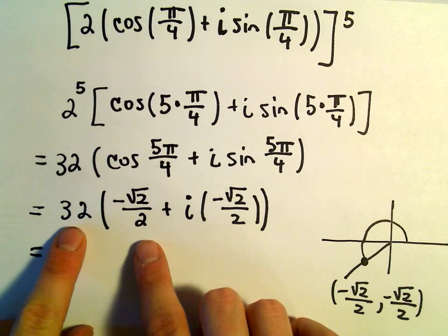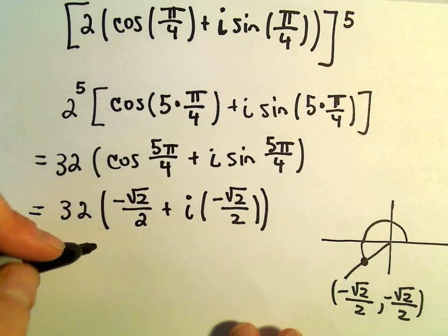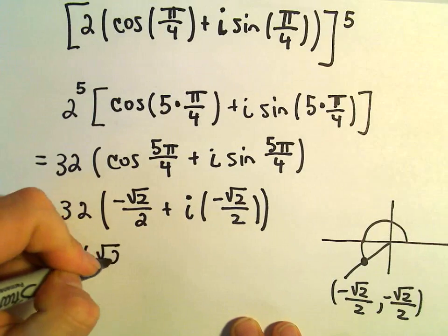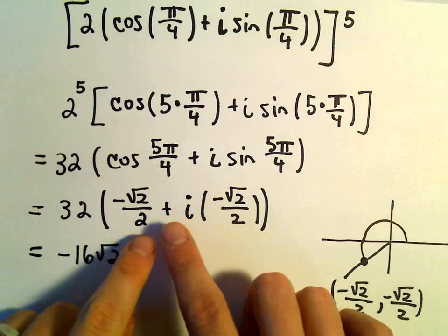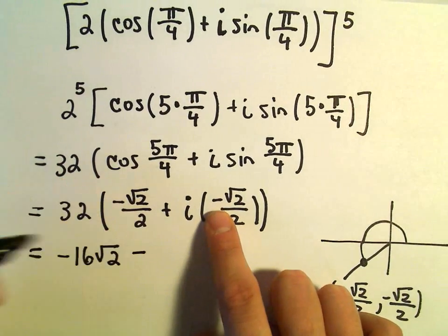If we distribute the 32 out, we'll get 32 over 2, which will be 16. So we'll get negative 16 times the square root of 2. We've got a positive and a negative, so that'll make a negative.